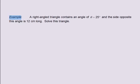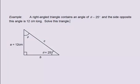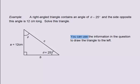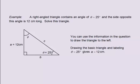For example, a right-angled triangle contains an angle of theta equals 25 degrees and the side opposite this angle is 12 centimetres long. Solve this triangle. First, draw the triangle. You can use the information in the question to draw the triangle to the left. Drawing the basic triangle and labelling theta equals 25 degrees gives a — the opposite side — equals 12 centimetres.